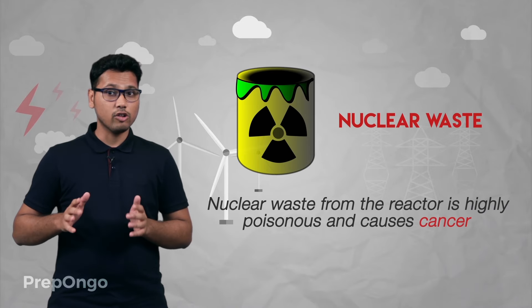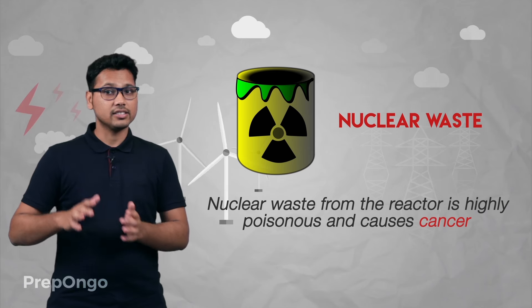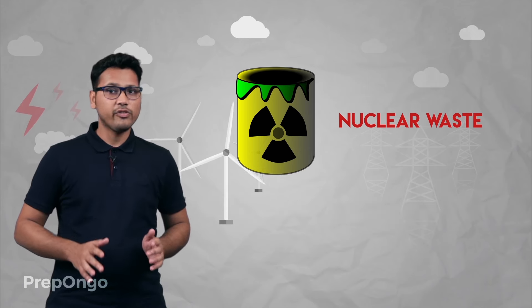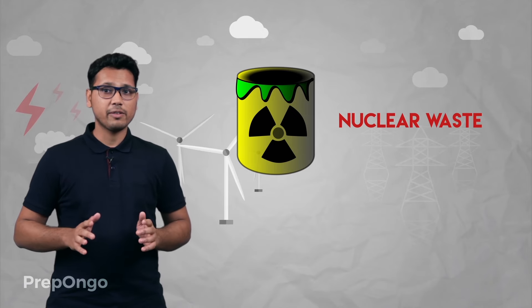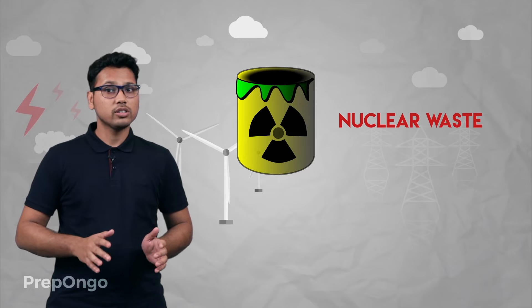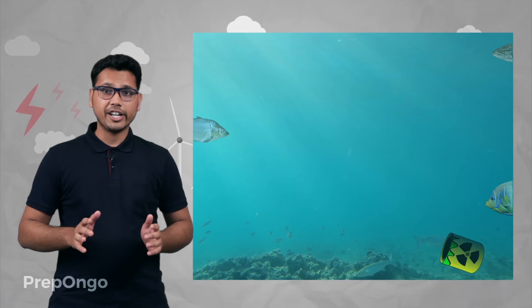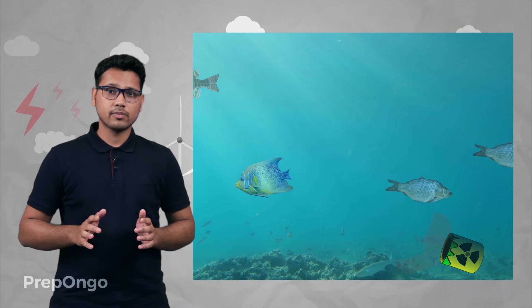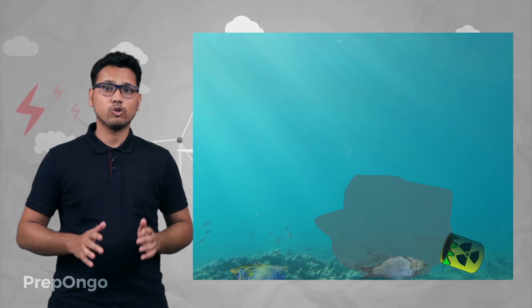Now the major problem that arises in the use of nuclear reactors is that the waste which is left out after the nuclear reactions is highly poisonous and also causes cancer. So we have to dispose of this waste in very far away places from the community. The disposal of waste from nuclear power plants is done in deep sea so as to avoid possible contact with them, but ultimately this waste causes damage to aquatic life.